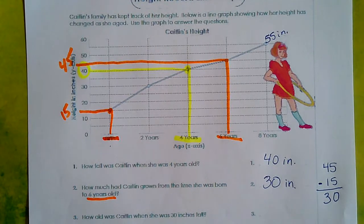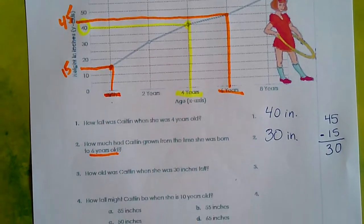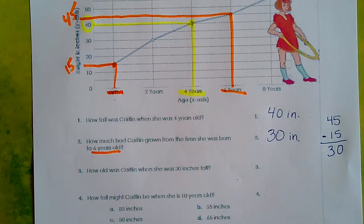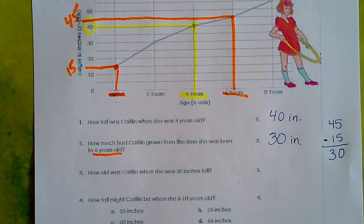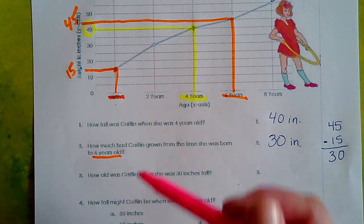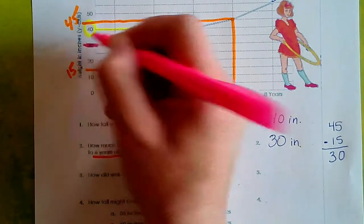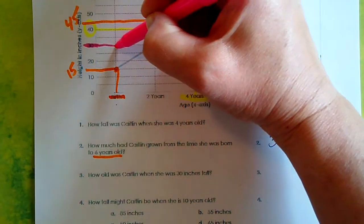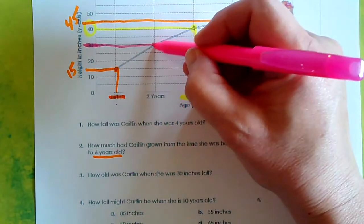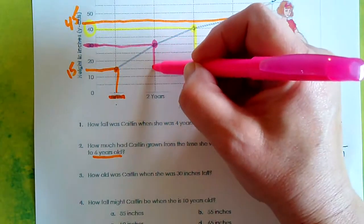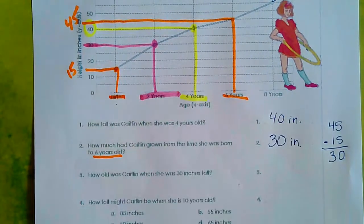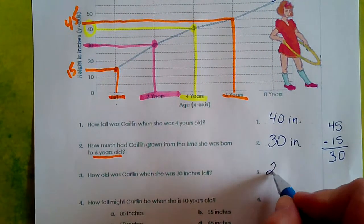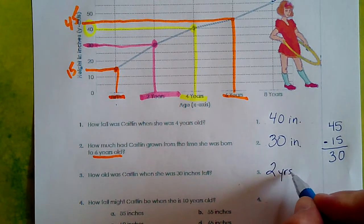All right. Now we're going to have to read this chart backwards a little bit. Okay. How old was Caitlin when she was 30 inches tall? So now we have to go over here and find 30 inches, which is right here. Okay. And to find out how old she was, we're going to follow this line over until we reach our point. Then we're going to drop down. And we find out that Caitlin was two years old when she was 30 inches tall. So two years old.